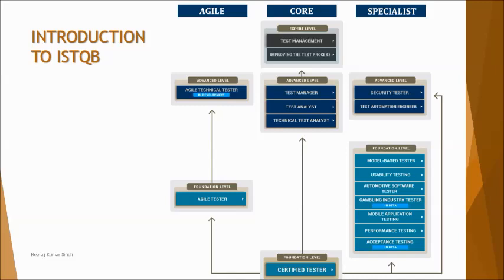We generally have certifications from the agile point of view, the core practices, as well as the specialist. For every other certification, the foundation level certified tester is a qualifying criteria. Once you are done with your foundation level you can move into agile certifications. You can also take certain specialist levels after the foundation level, or move into process or project specific role certifications like test manager, test analyst, or technical test analyst. The foundation level certification is the prerequisite for all of these, and we are talking in this series about the agile tester, which requires the foundation level as prerequisite.